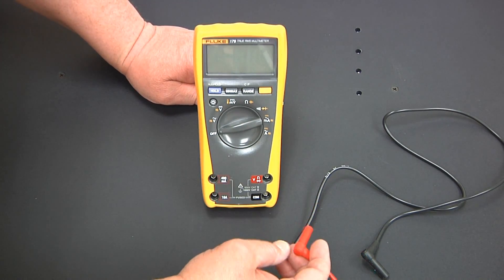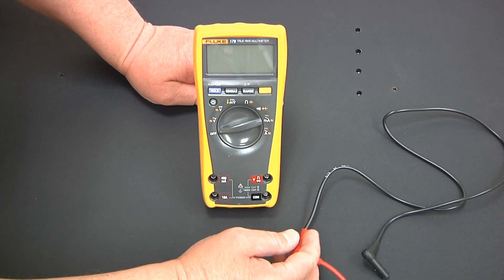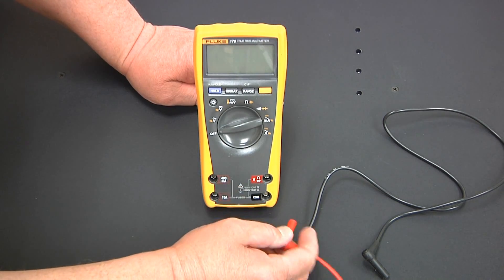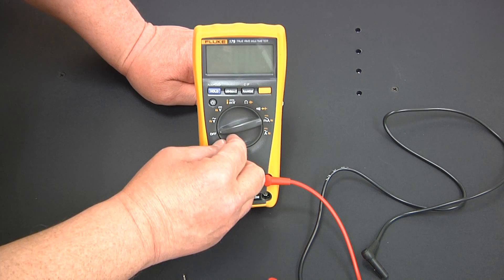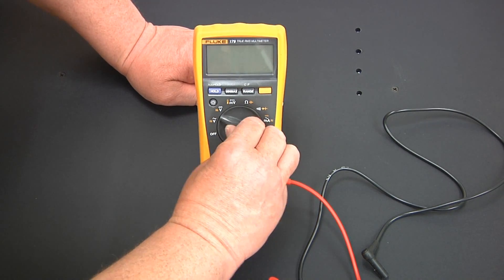To do this, first connect the red lead to the red port on the digital multimeter. Then turn the dial and select resistance measurements.